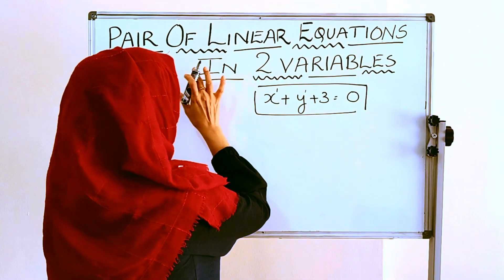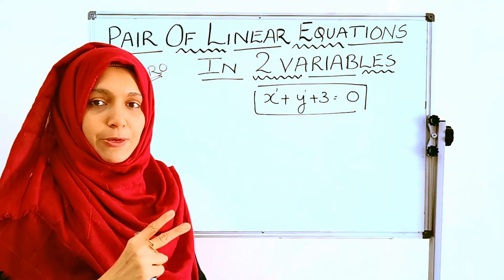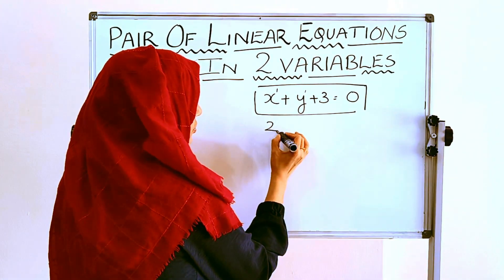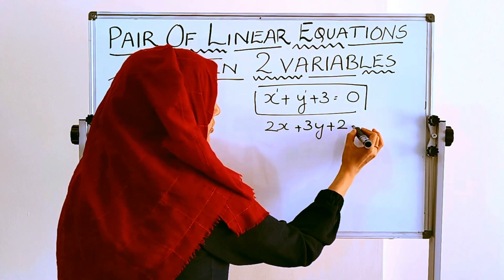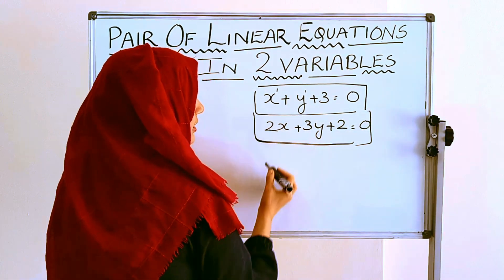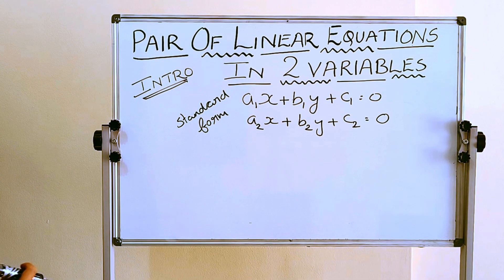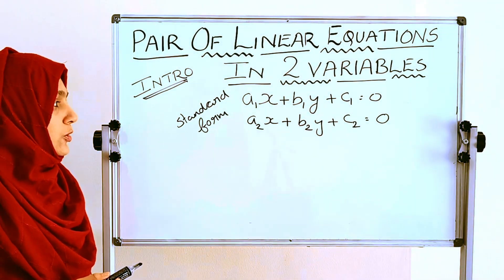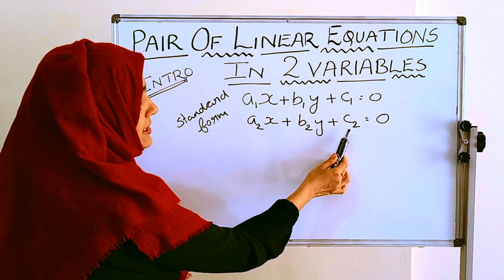We will find the pair of linear equations. Pair of linear equations means two equations. We will find the solution. The next equation: let it be 2x plus 3y plus 2 equal to 0. This is also a linear equation with degree 1 and equated to 0. The standard form is a1x plus b1y plus c1 equal to 0, and similarly a2x plus b2y plus c2 equal to 0.